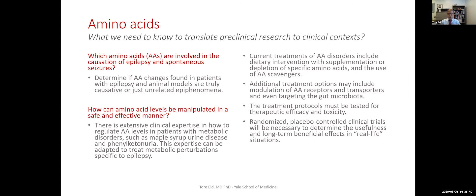There are other options worth looking into. We can think about ways to block the receptors that amino acids bind to. There may be ways to block or increase the transport of amino acids from the blood into the brain and into nerve cells or other brain cells. And there may be very exciting options to treat the gut bacteria, because gut bacteria make a lot of amino acids — especially D-amino acids — which may have effects on the brain.